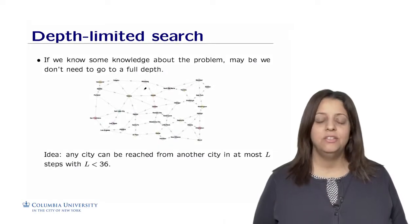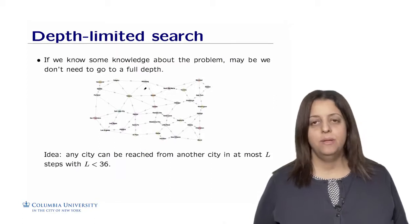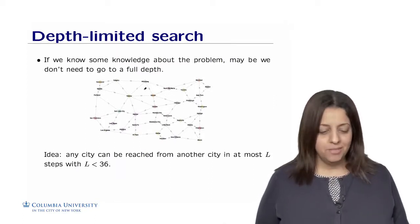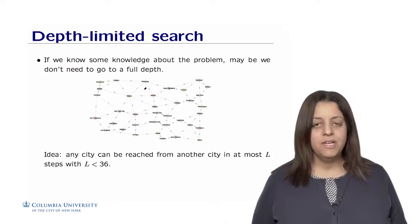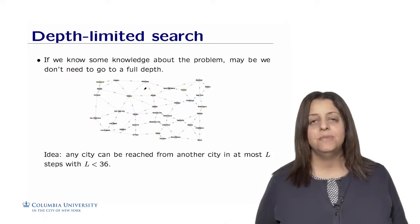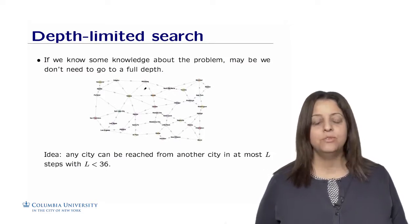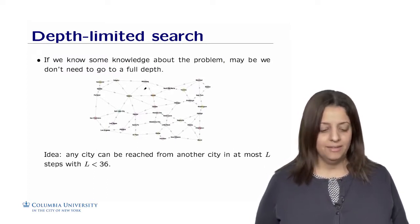Methods like depth-limited search and iterative deepening are particularly useful if we have some knowledge about the problem. Maybe we don't have to go full depth after all. For example, in the case of the map, if we know that any city can be reached from another city within some limit at most L steps, where L is less than 36 in the example, maybe we don't need to go as deep in the search tree and just limit it to some limit L.